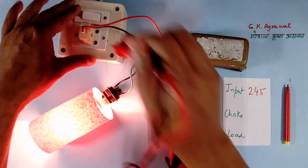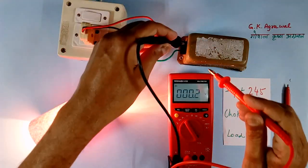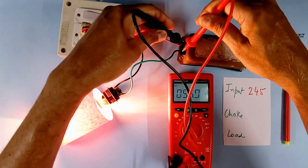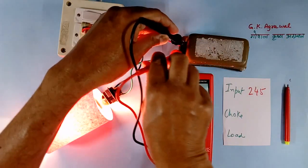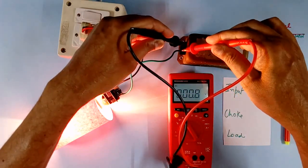Now I will measure the voltage of the choke. Choke voltage is 55V.